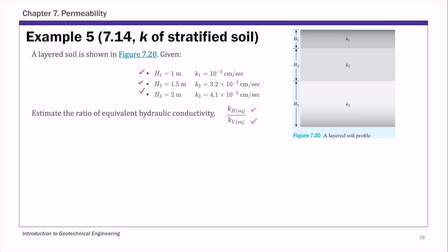And to do that, we first calculate kh equivalent. So kh equivalent, plugging the equation for equivalent hydraulic conductivity of horizontal flow: 1 over h times k1 h1 plus k2 h2 plus k3 h3.